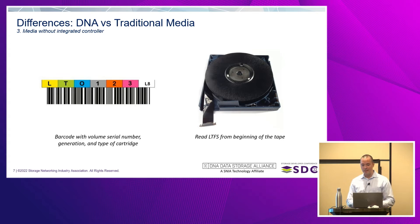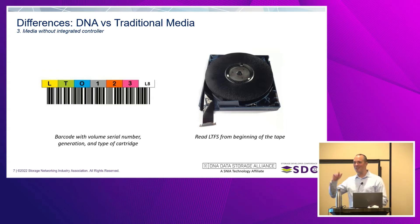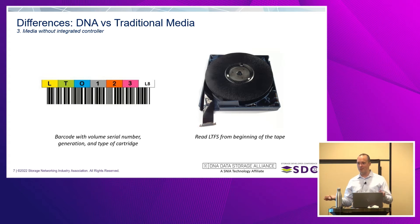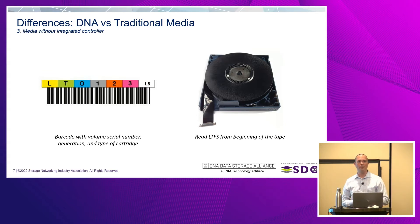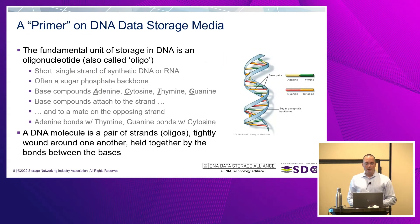Some types of media like tape don't have that same benefit — they don't have a built-in controller. You need a drive for it; you have metadata external to the media, and you rely on the barcode with metadata and your proximity from the beginning or end of the tape. With DNA, you don't have those properties, which presents an interesting challenge. These little containers of goop — you have no idea what's in them — and we have to put some kind of usable interface on top of that.